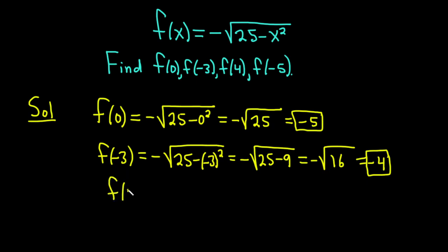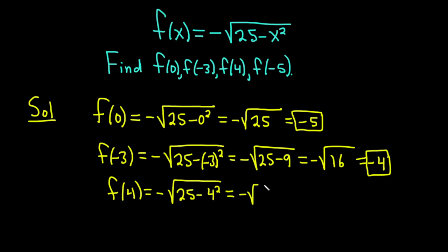f of 4 — again, replacing all of the x's with 4, it's going to be negative square root of 25 minus 4 squared. 4 squared is 16, so minus 16. 25 minus 16 is 9, so this is equal to negative square root of 9. The square root of 9 is 3, so we just get minus 3.